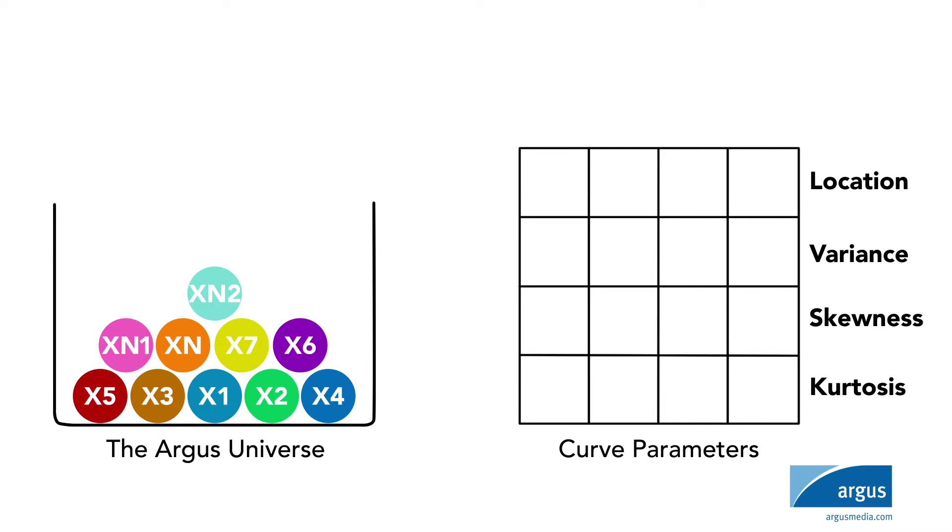The model initially starts without a driver from the Argus Universe. This is also where we first make a calculation to account for error. The error balances two objectives: one being the fidelity to the data, and two, the model's complexity.